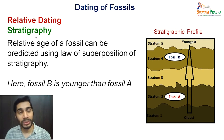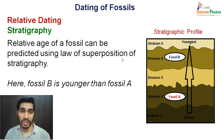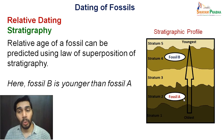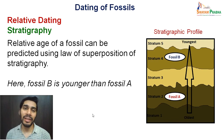Using stratigraphy for relative dating means the relative age of a fossil can be predicted using the law of superposition. For example, if you find a fossil in stratum 2 and another fossil in stratum 4, then fossil A is obviously older than fossil B, or fossil B is younger than fossil A. This is simple relative dating of fossils.